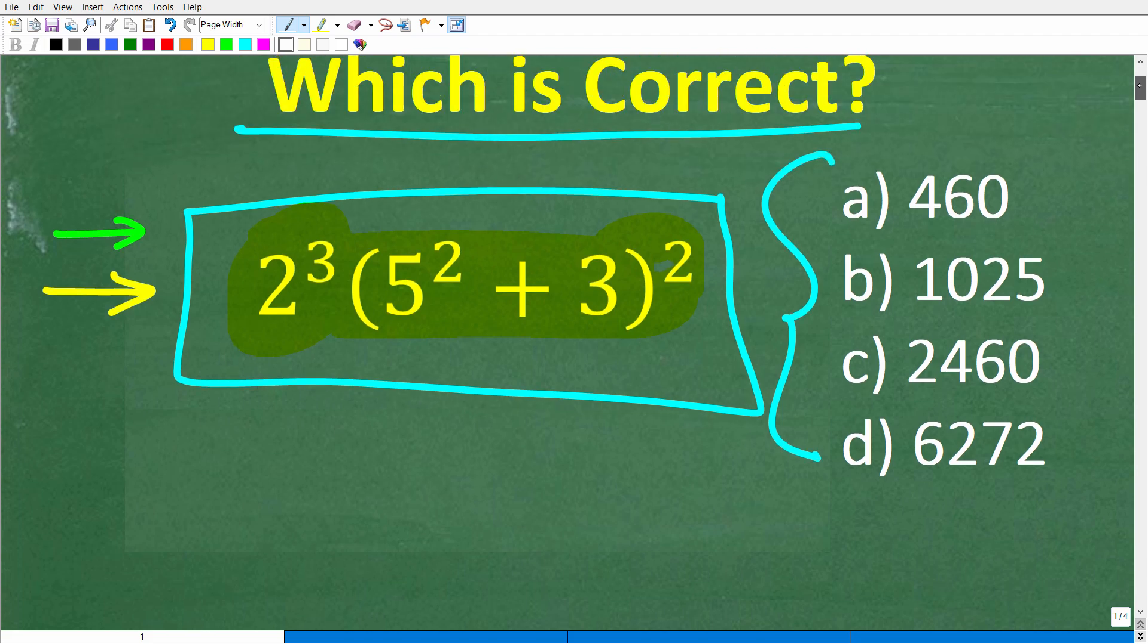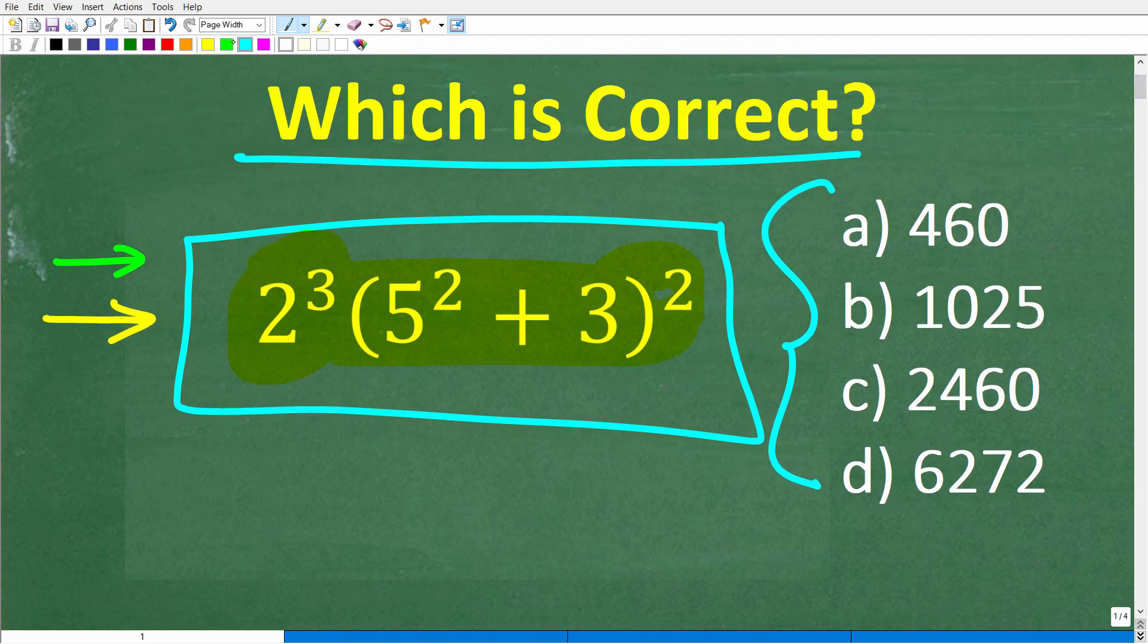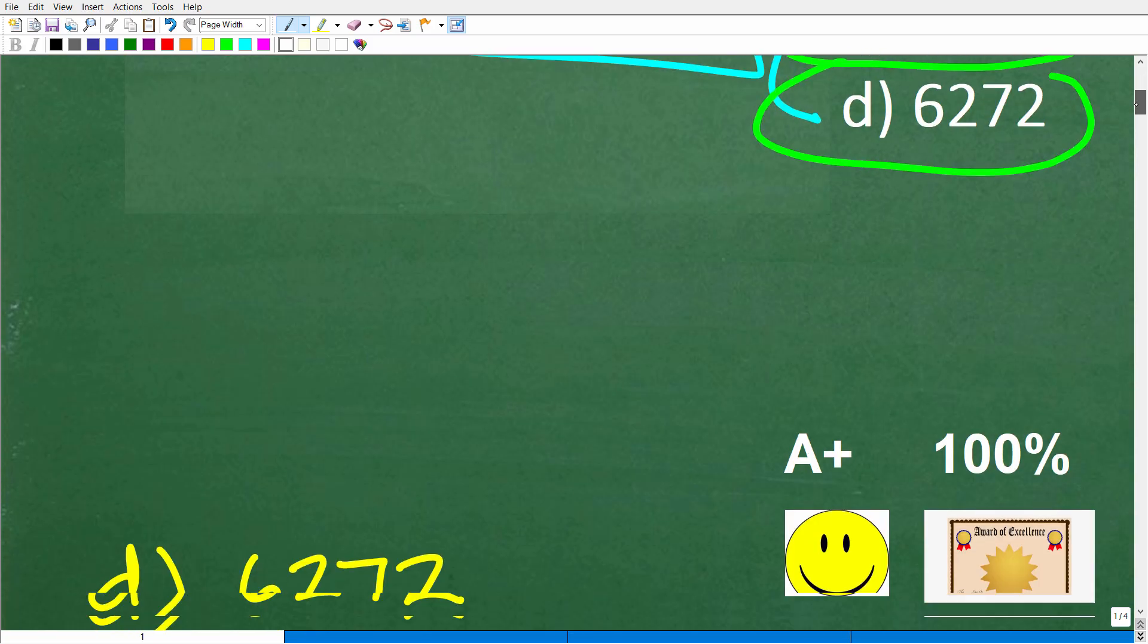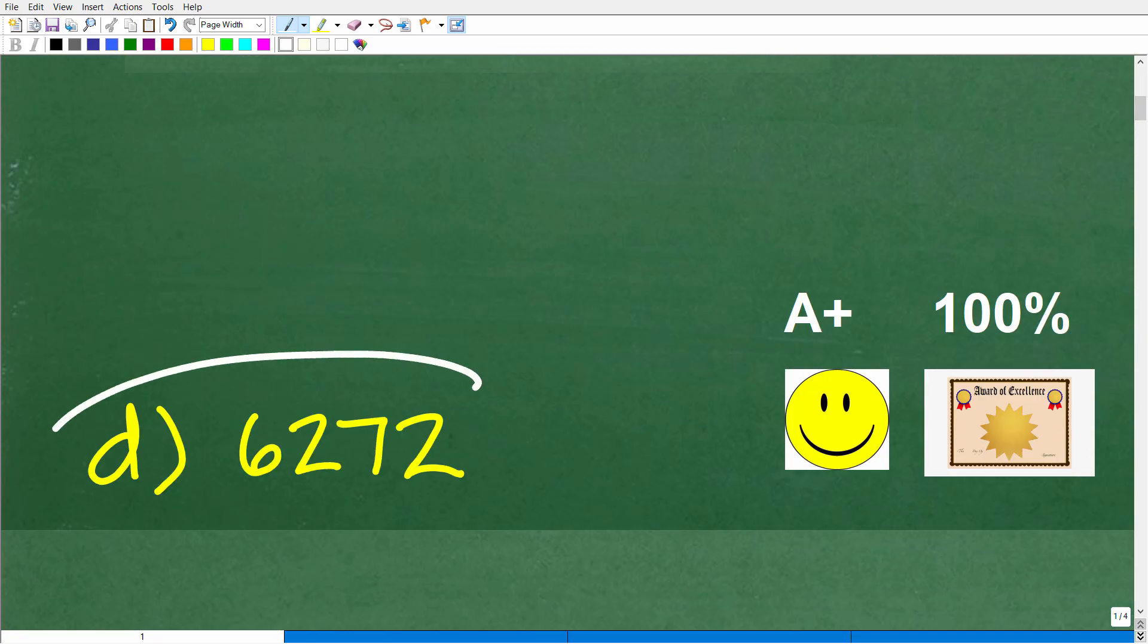All right, so here is our problem and here is our choices. So A is 460, B is 1025, C is 2460, and D is 6272. All right, so let's take a look at the correct answer. The correct answer here is D, 6272.